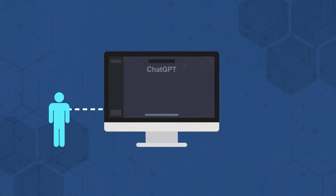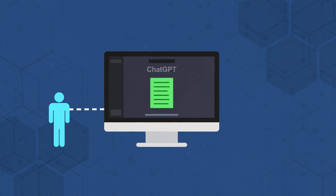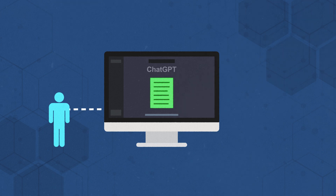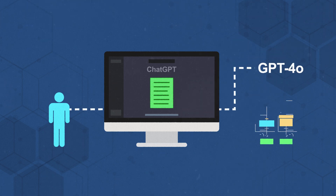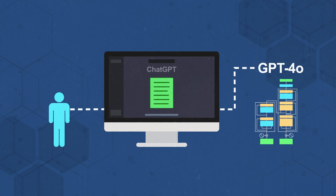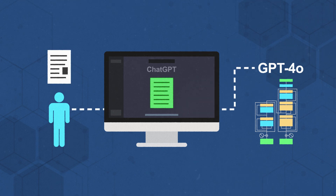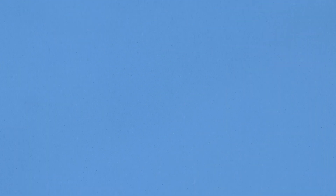For example, when you're prompting ChatGPT to help you write an essay, meal plan, or anything else, ChatGPT generates answers on the back-end by accessing an LLM, like GPT-4o, a foundation model that uses a transformer architecture, and spits the answer back to you in the chat box.